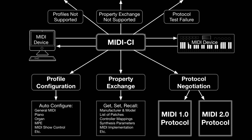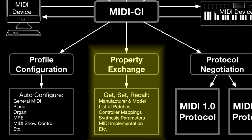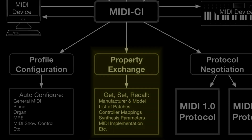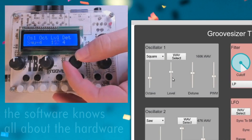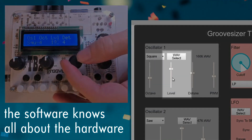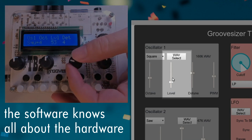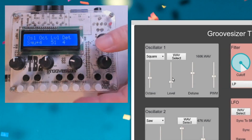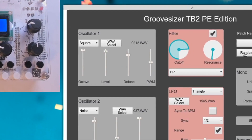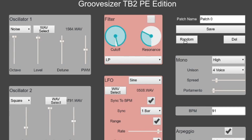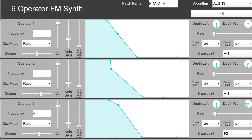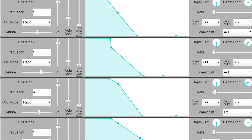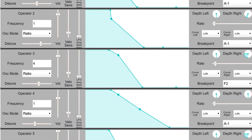While profiles set up an entire device, property exchange messages provide specific, detailed information sharing. These messages can discover, retrieve, and set many properties like preset names, individual parameter settings, and unique functionalities — basically everything a MIDI 2.0 device needs to know about another MIDI 2.0 device. For example, your recording software could display everything you need to know about a hardware synthesizer on screen, such as preset names and parameter values. This brings the same kind of instant recall associated with software synthesizers to hardware synthesizers.